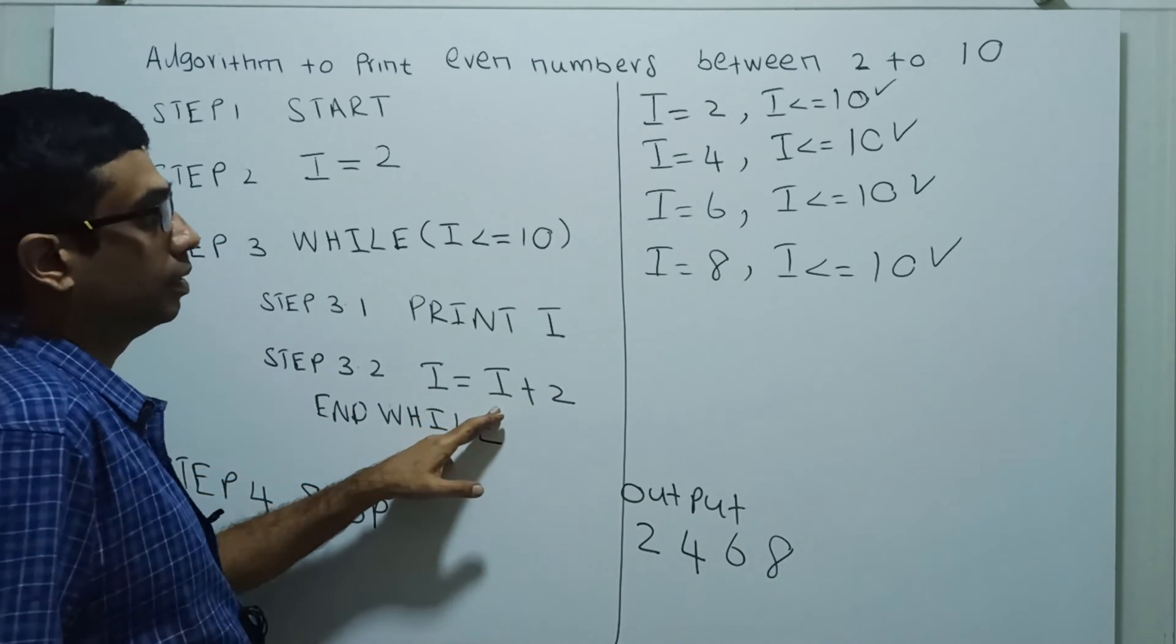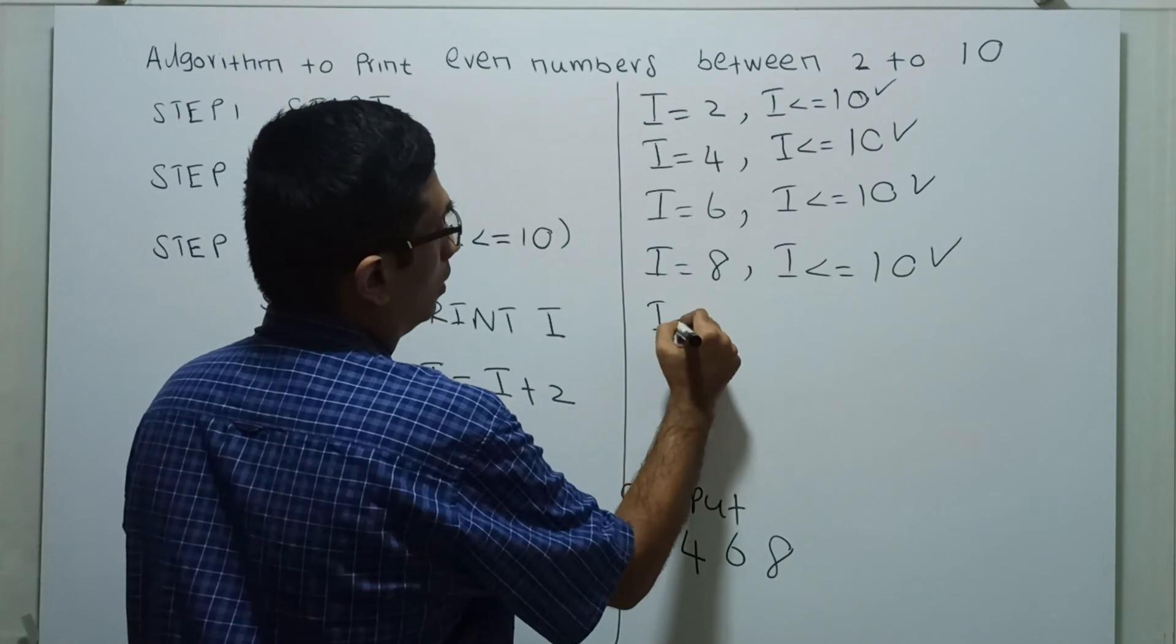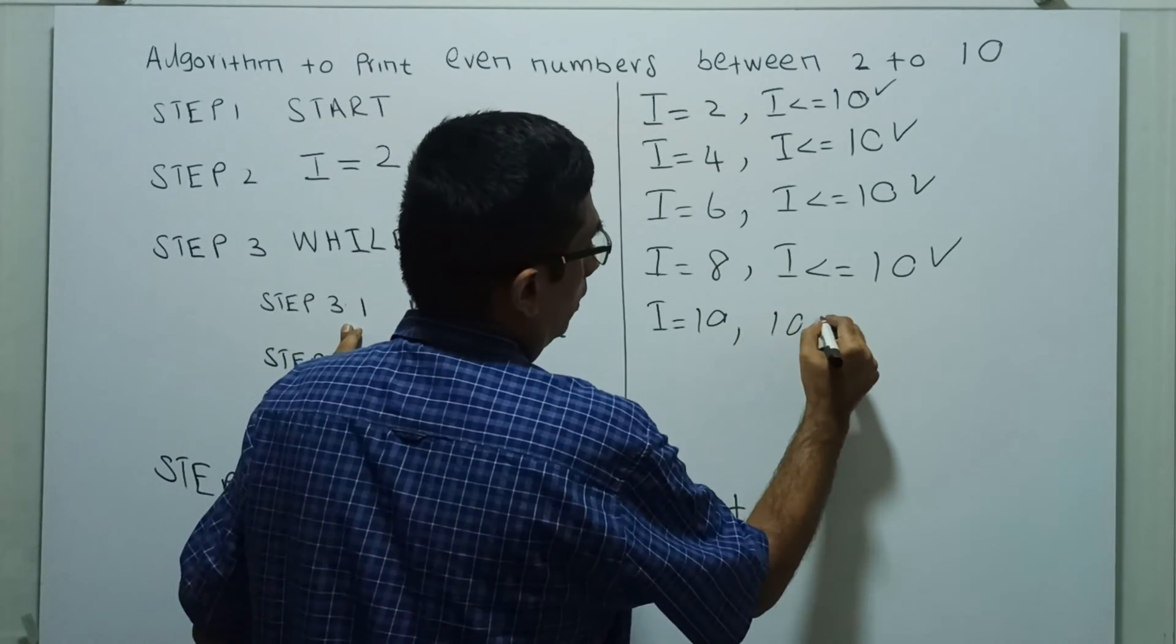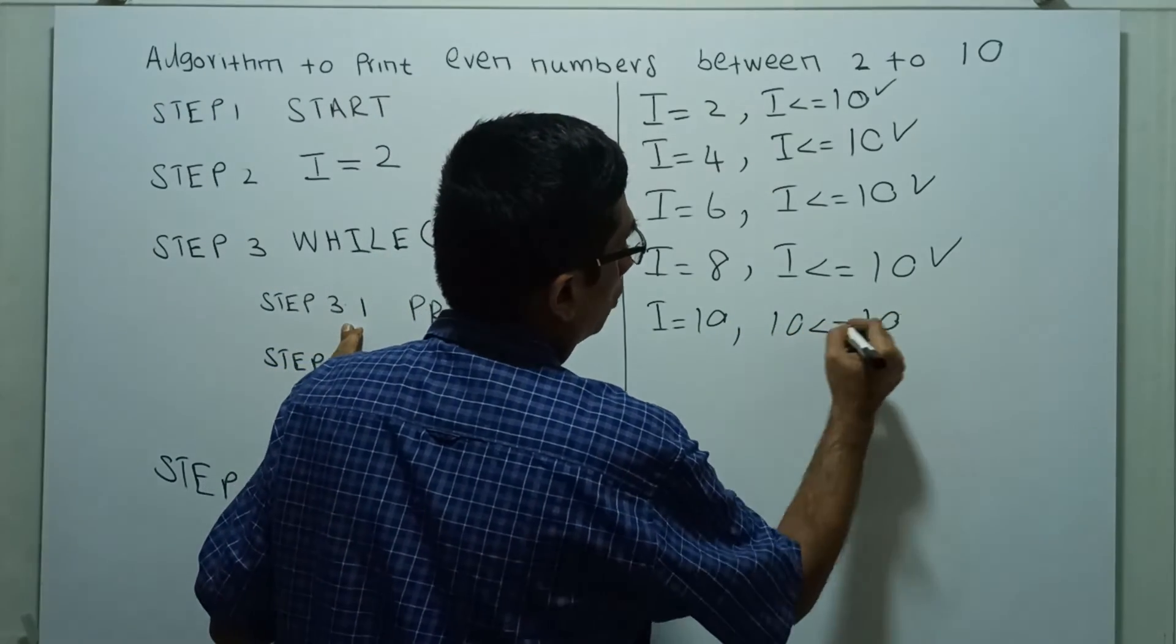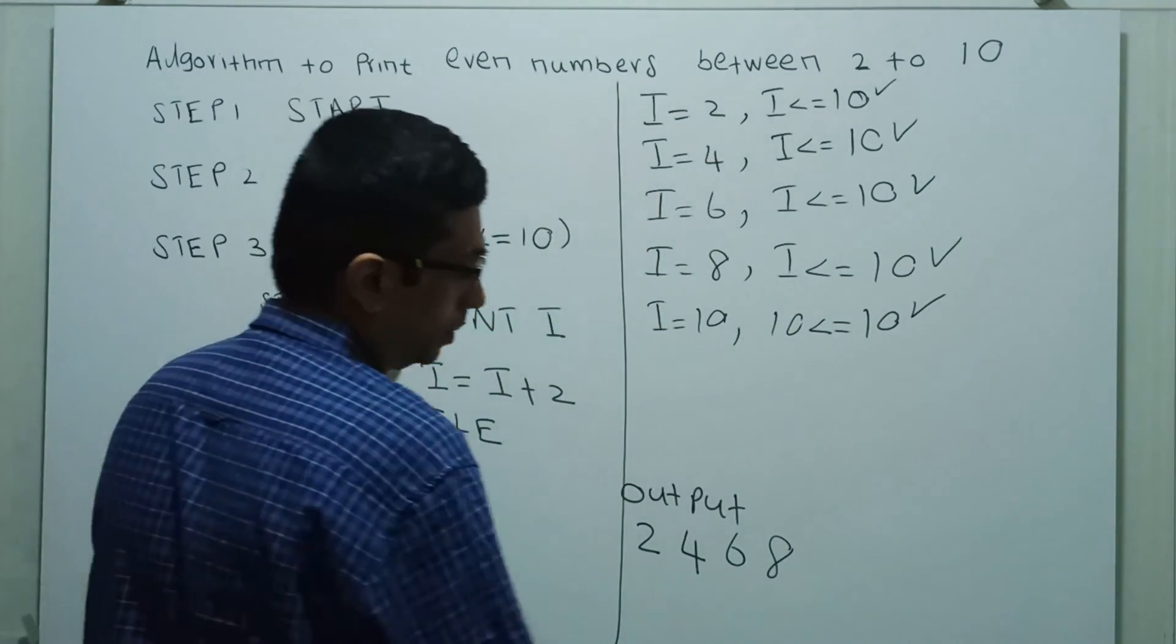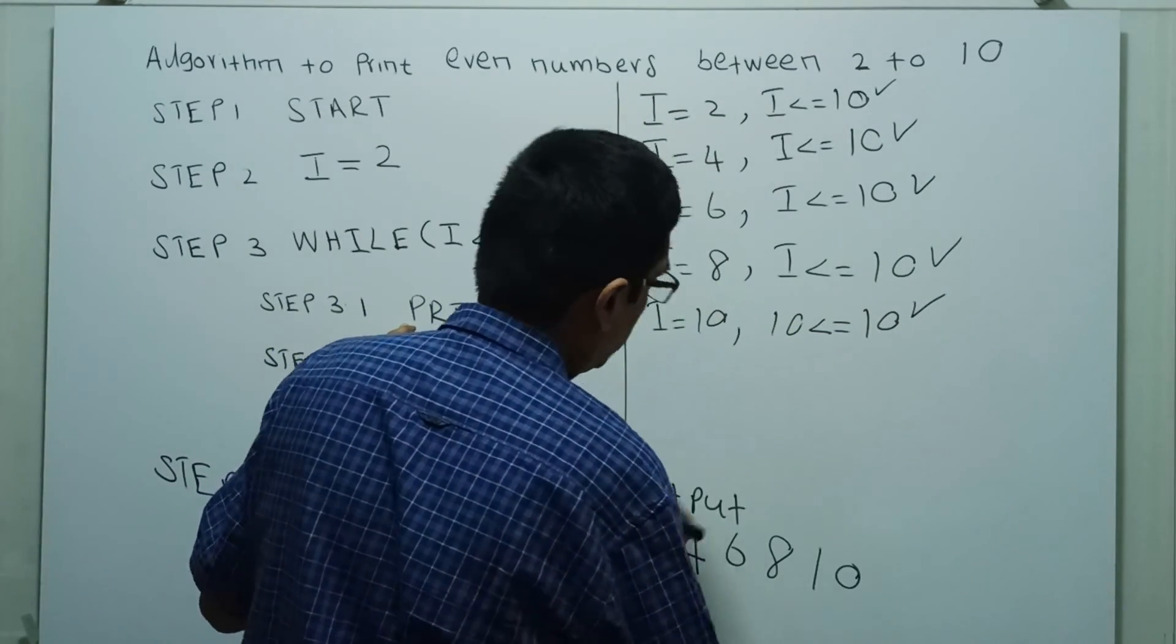I equal to I plus 2. I equal to 10 now. Then I less than or equal to 10, that's why it is true now. Print I. 10 will get printed.